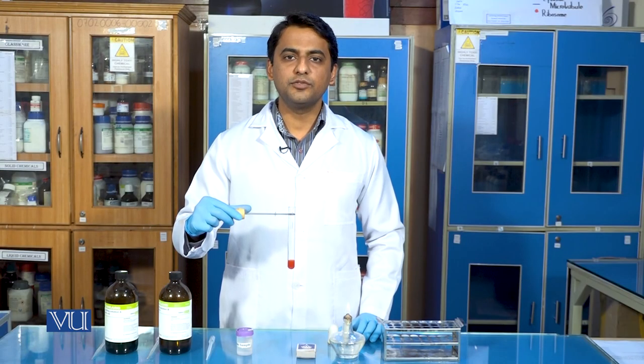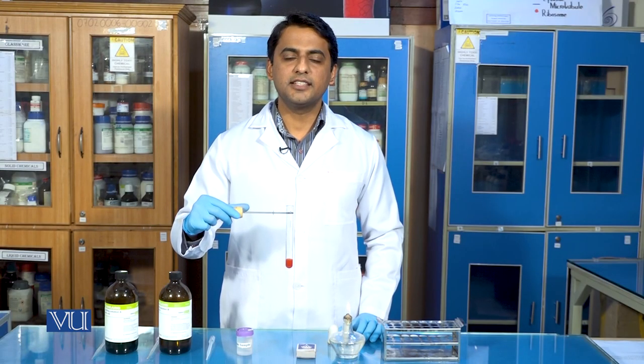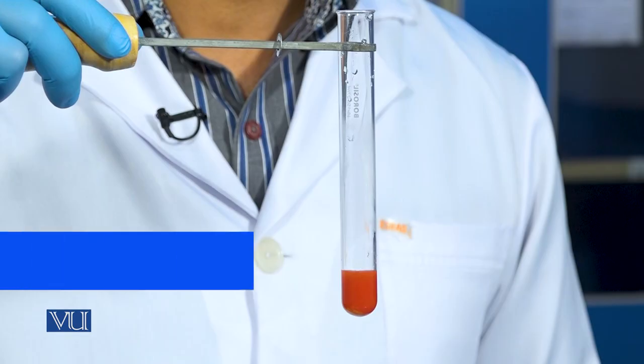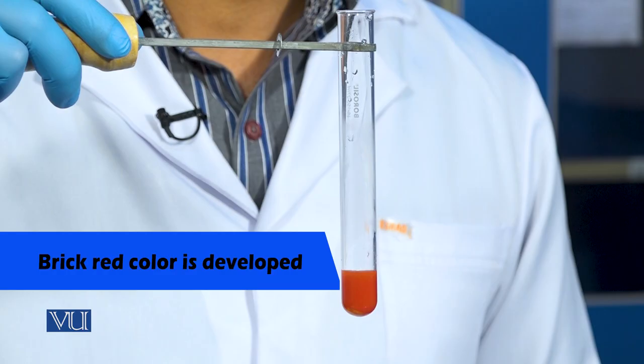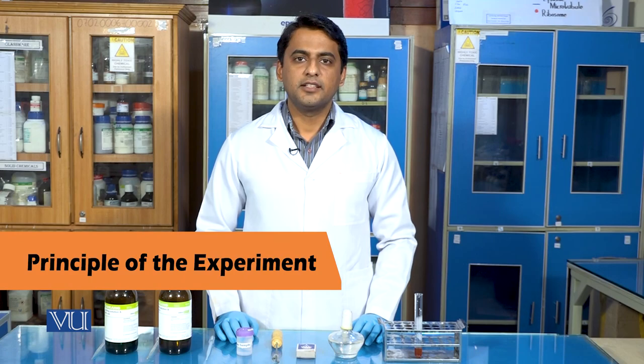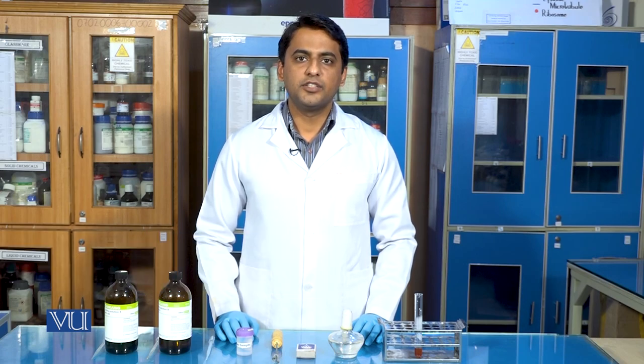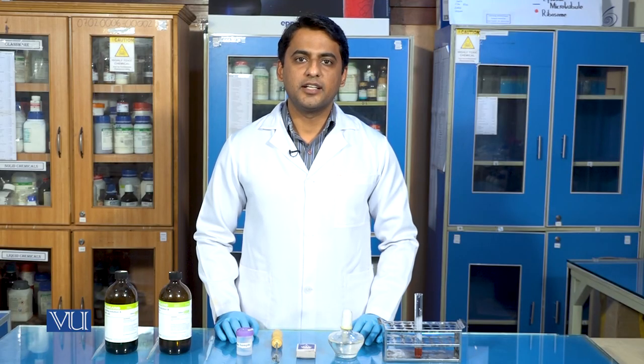So students, we can see that the blue color has turned into dark brick red color, which is the indication that glucose is present in urine sample. The principle of the experiment is that the cupric ions present in fehling solution on heating get converted into cuprous oxide, producing brick red color by the reducing agent sugar.